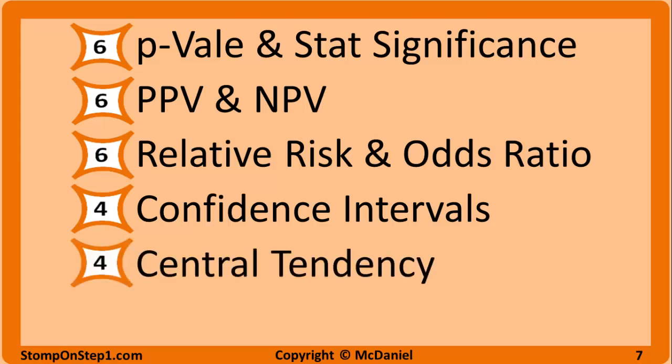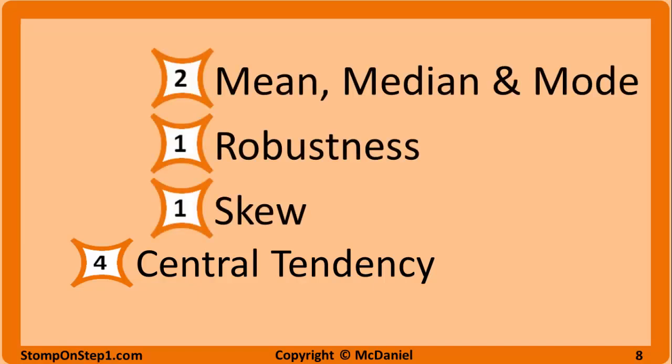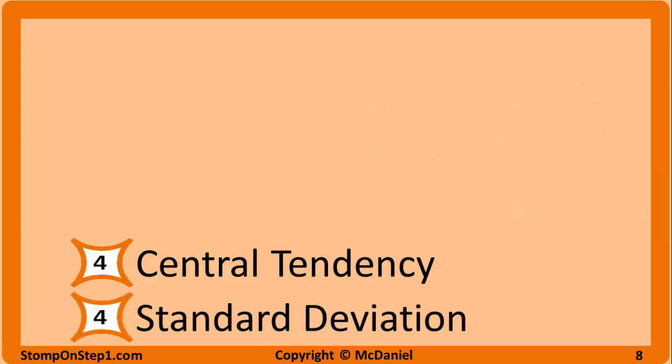The next grouping in the mid-range is measures of central tendency. You need to know how to calculate mean, median, and mode, what their definitions are, how these three measures change as a result of changes to the data set — how robust these measures are — and how they can graphically appear on a histogram with different types of skew. Standard deviation also has a high yield rating of 4. You need to understand it conceptually and graphically, know how changes in sample size can affect standard deviation, but you do not need to know how to calculate it.